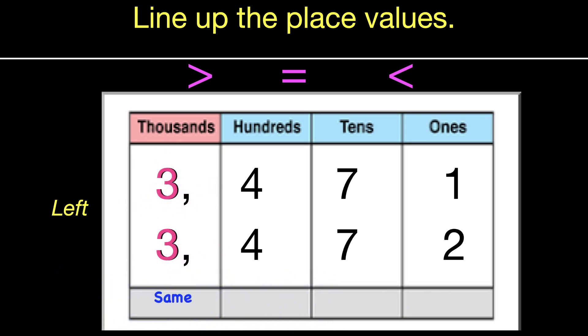So I can see that the three, the threes and the thousands are equal. If we look at the hundreds, we both have four hundreds. So that's the same. Same thing with our tens. We have two sevens.